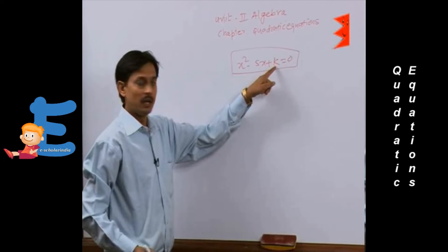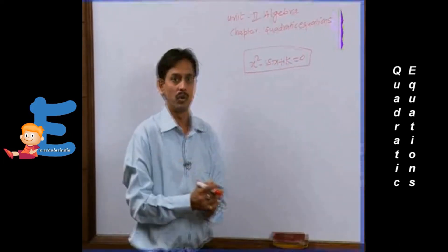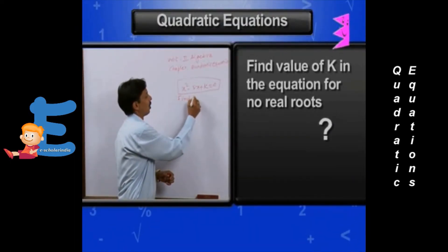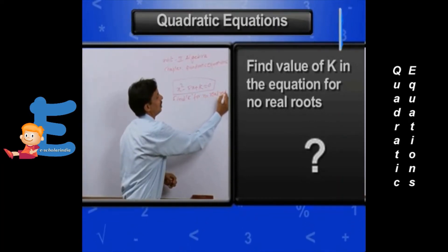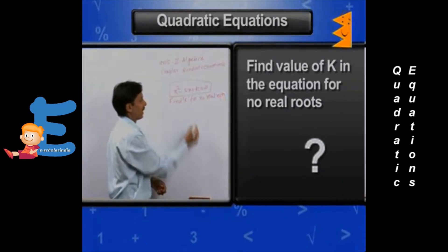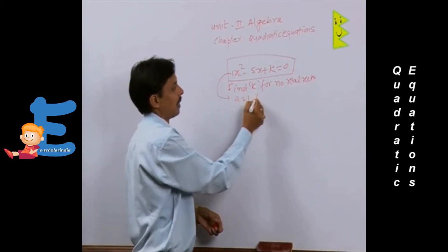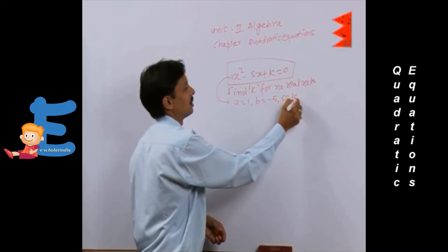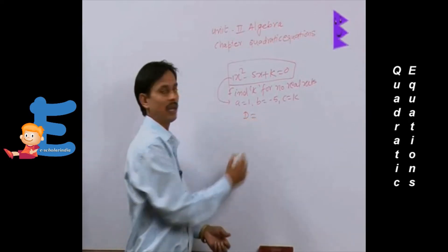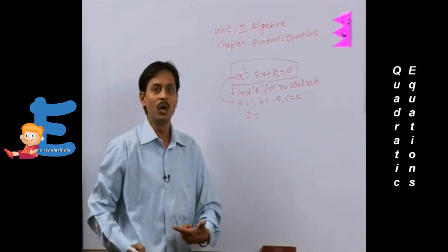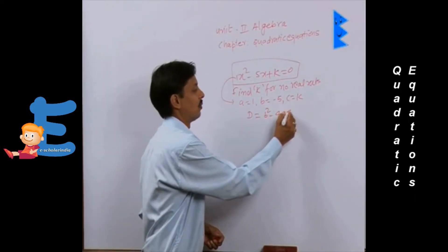Find k for no real roots. We compare with standard form and get a = 1, b = -5, and c = k. After finding these, the discriminant will be calculated, because the discriminant is the value which decides the nature of roots. Discriminant D = b² - 4ac = (-5)² - 4(1)(k) = 25 - 4k.